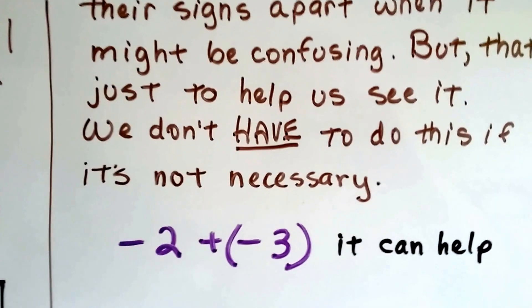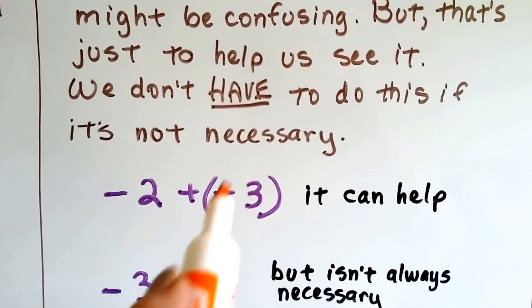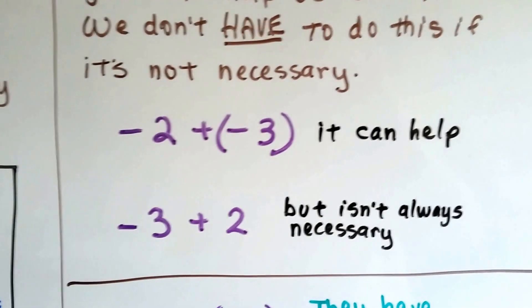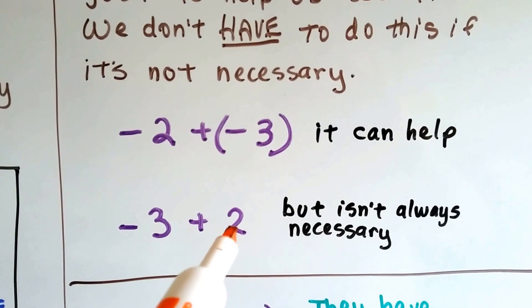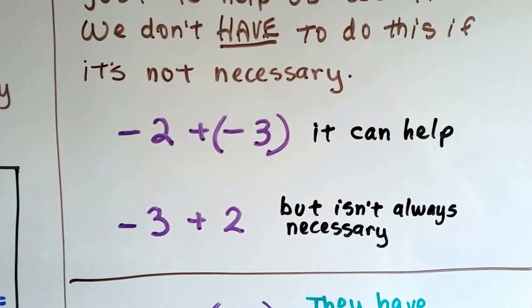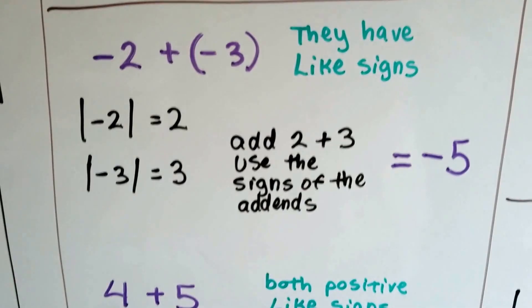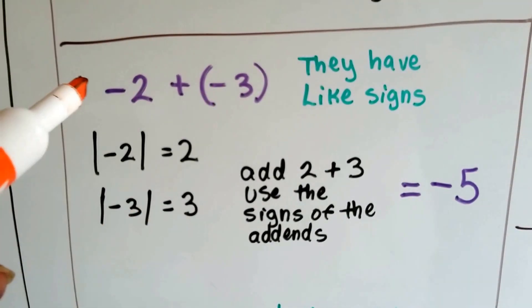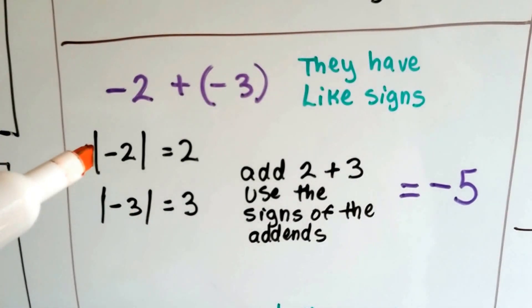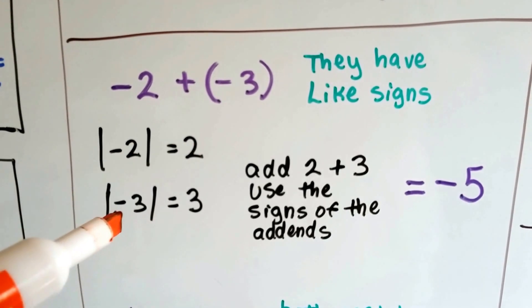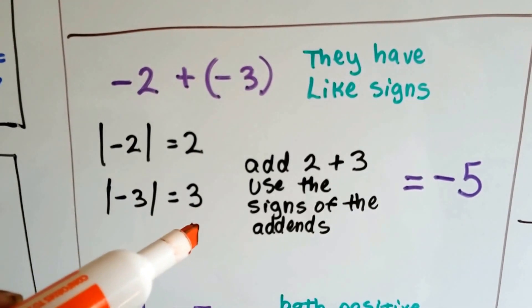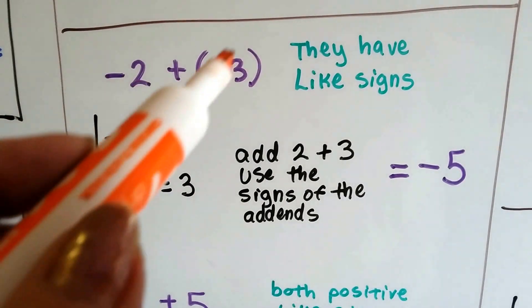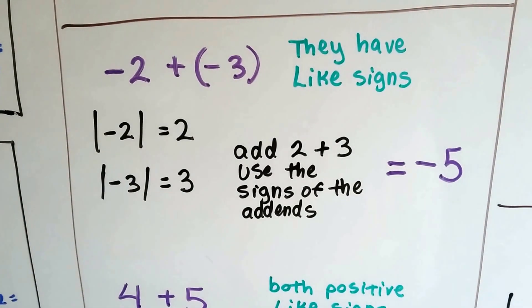For example, we could write negative 2 plus negative 3 in parentheses, and it helps our eyes keep that plus and that minus apart. But it isn't always necessary — if the negative is in front and the last one is positive, we can just write negative 3 plus 2. Now look at negative 2 plus negative 3: they both have a negative sign, so they have like signs. The absolute value of negative 2 is 2, and the absolute value of negative 3 is 3. We add 2 and 3 to get 5, and use the sign the addends shared — negative. So the answer is negative 5.